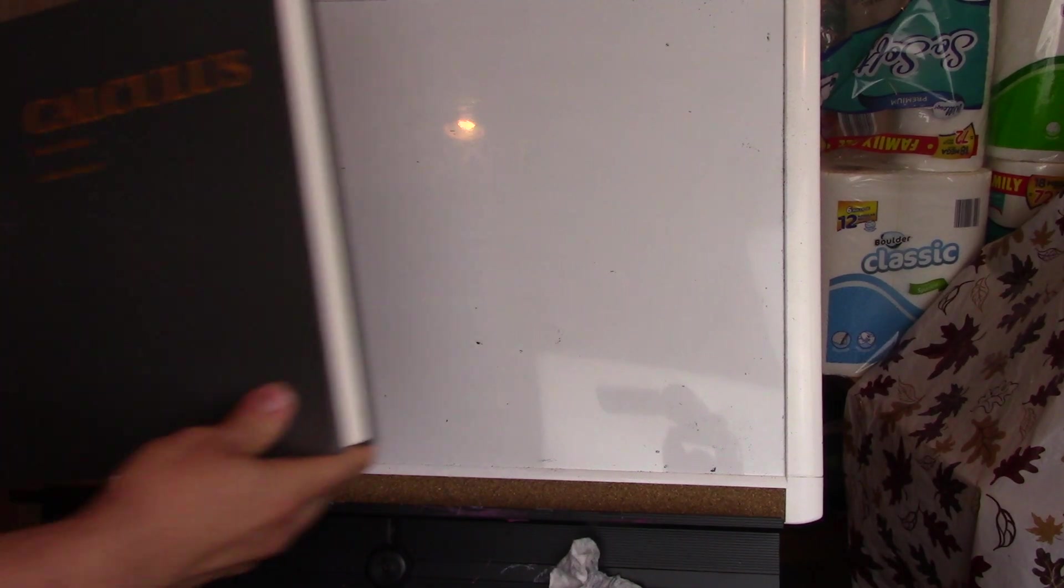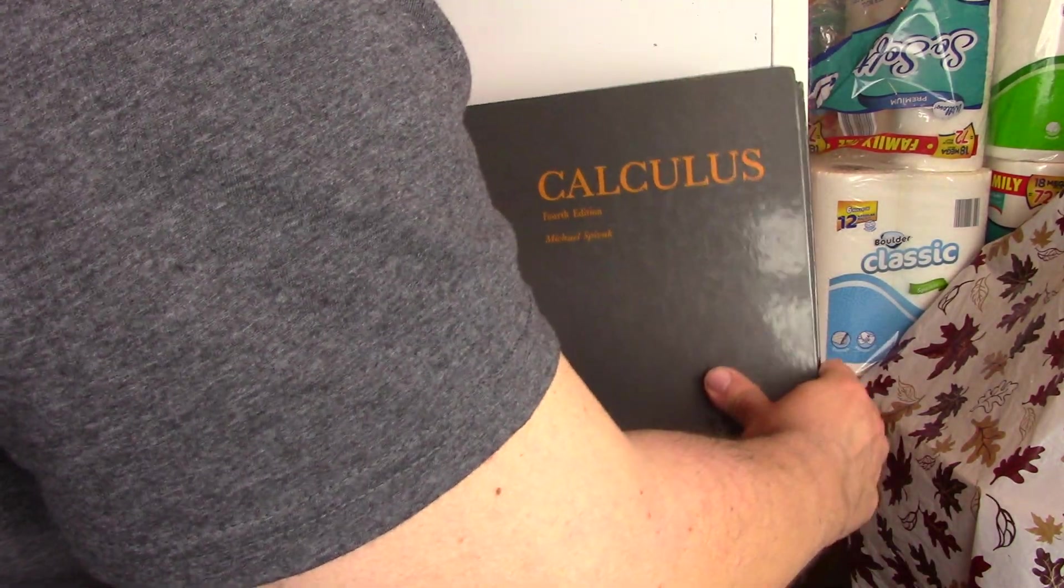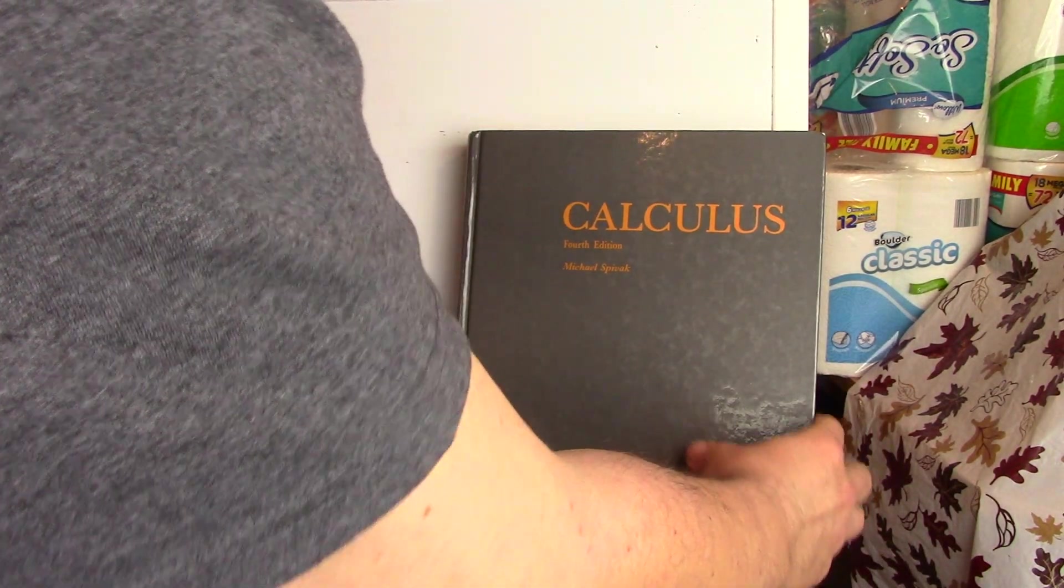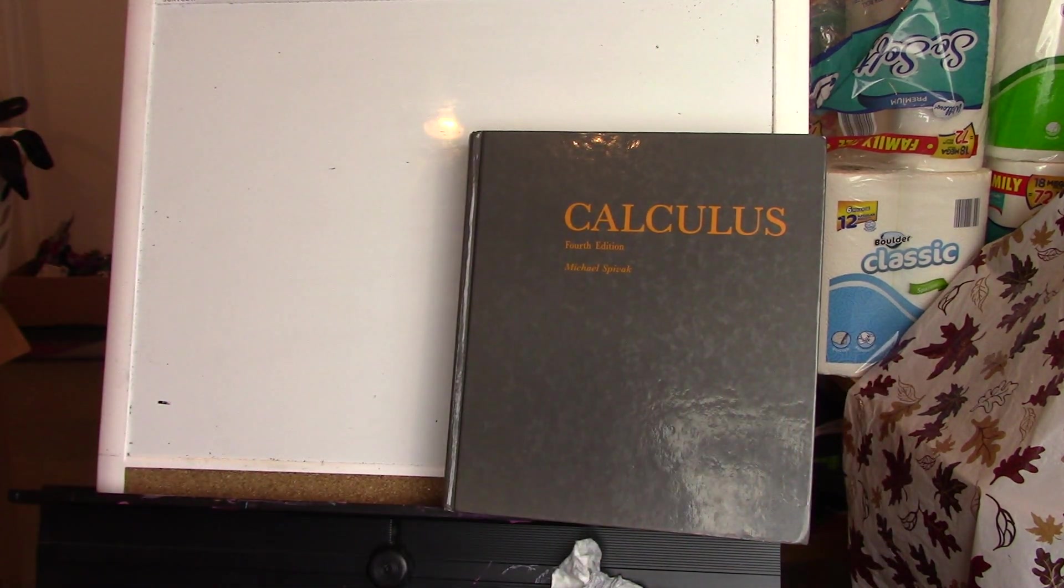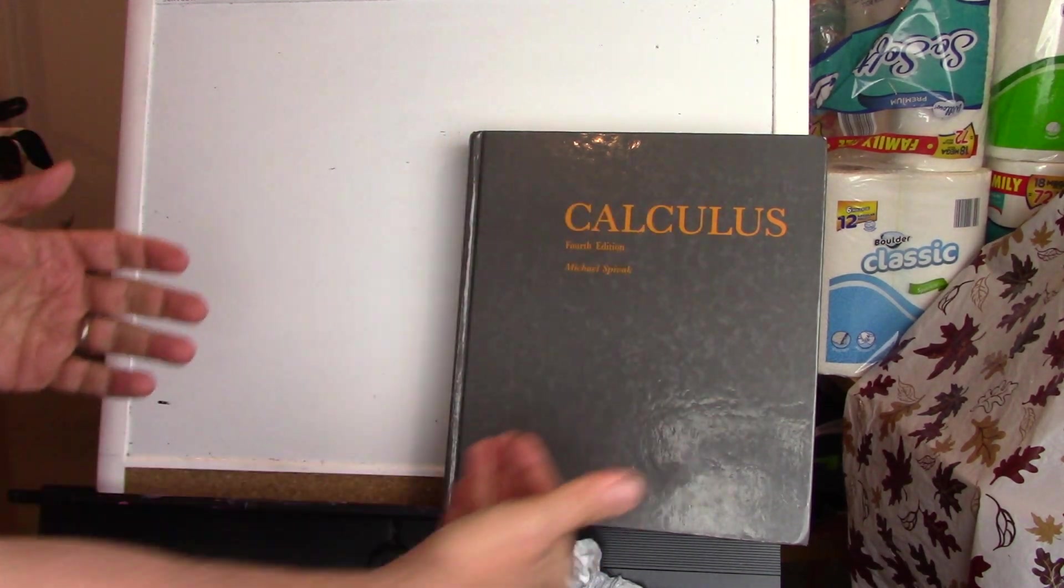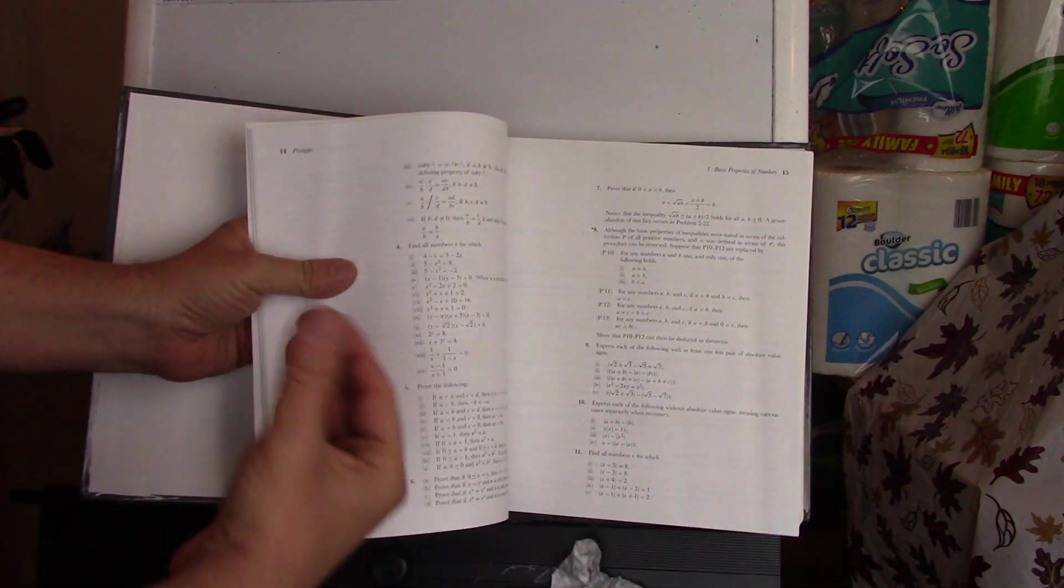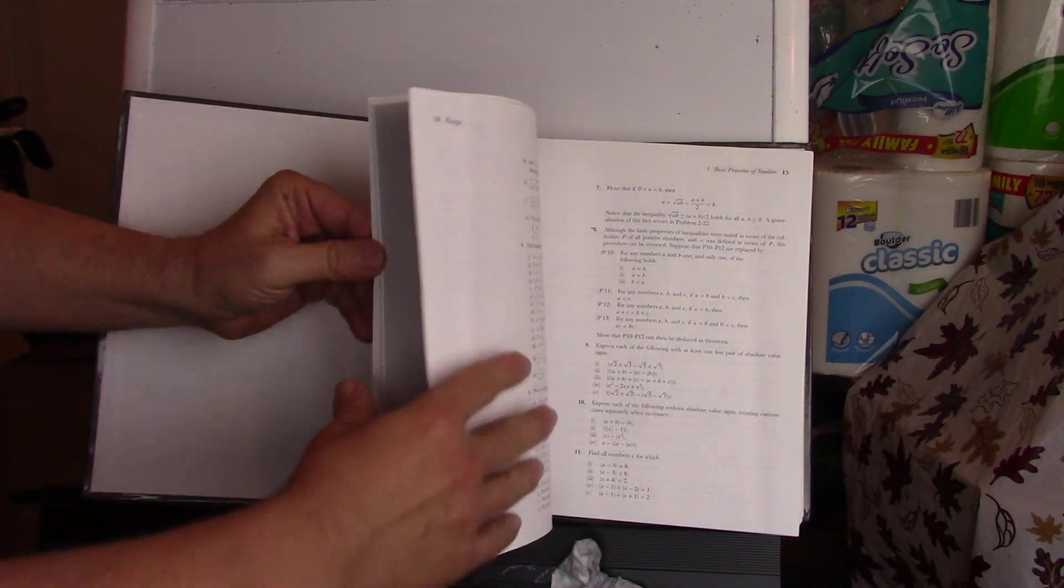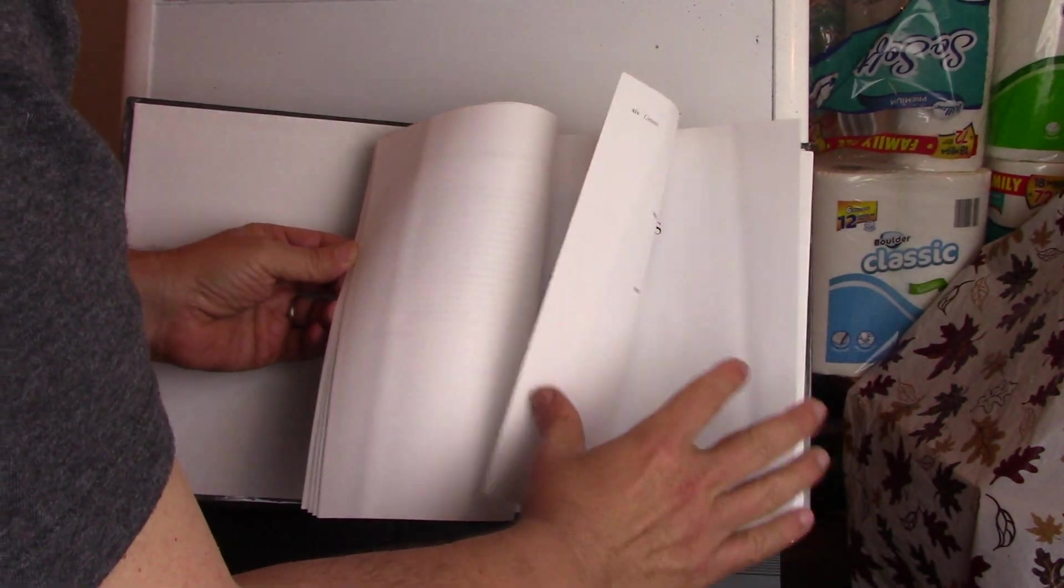Then I also have Spivak, or Spivak, I think I'm going to call him Spivak, Calculus, which is, you know, people say it's the best calculus book ever. I'm not sure that it is, because it doesn't cover as much as Thomas and Finney, but it is really good. I mean, what is the best? I think the best is 20 calculus books, if you ask me.